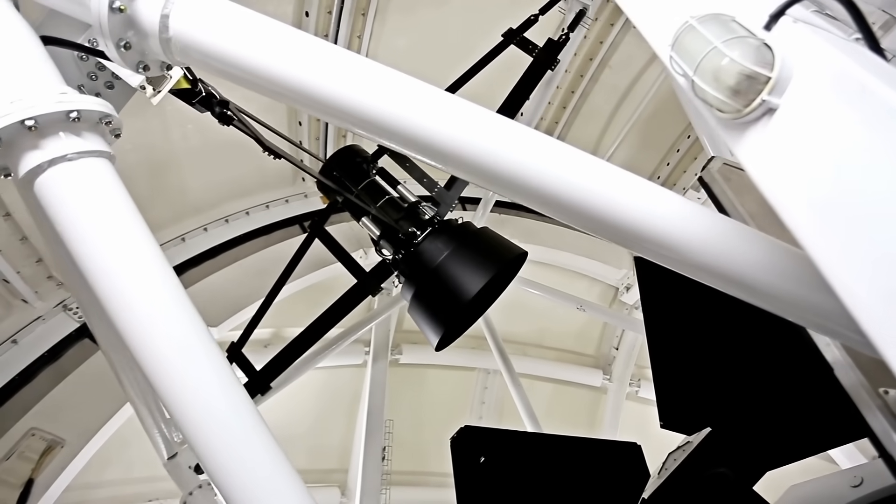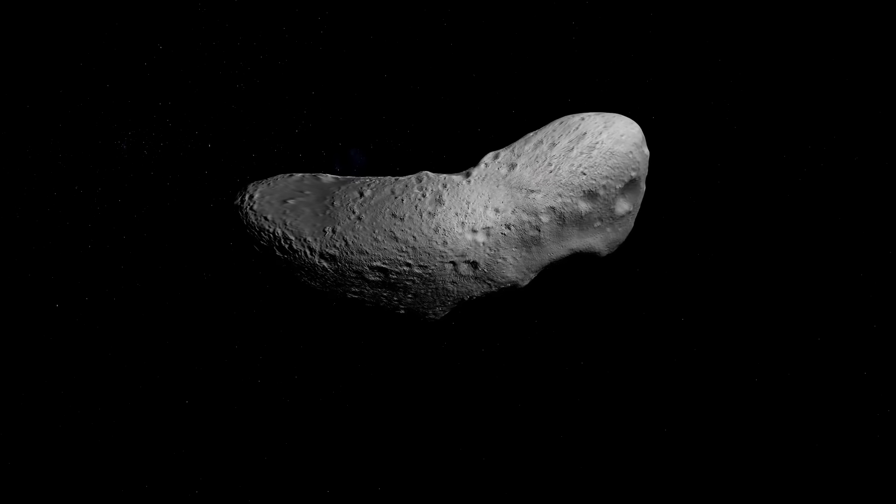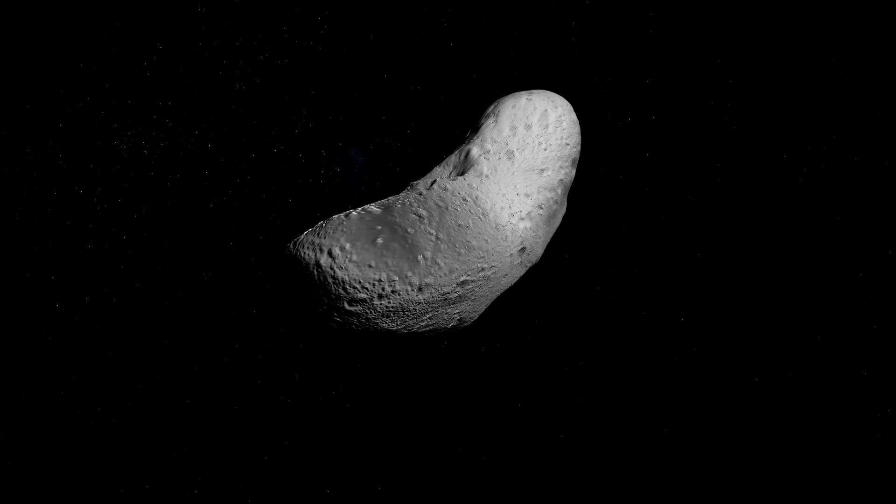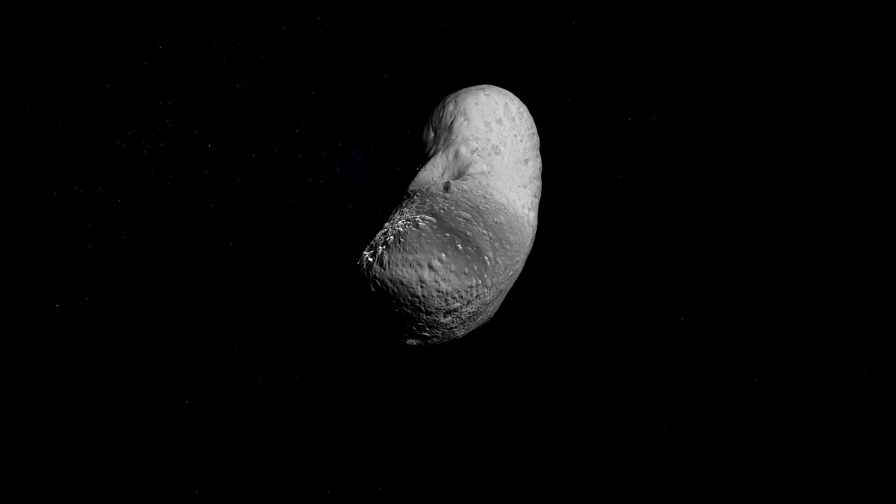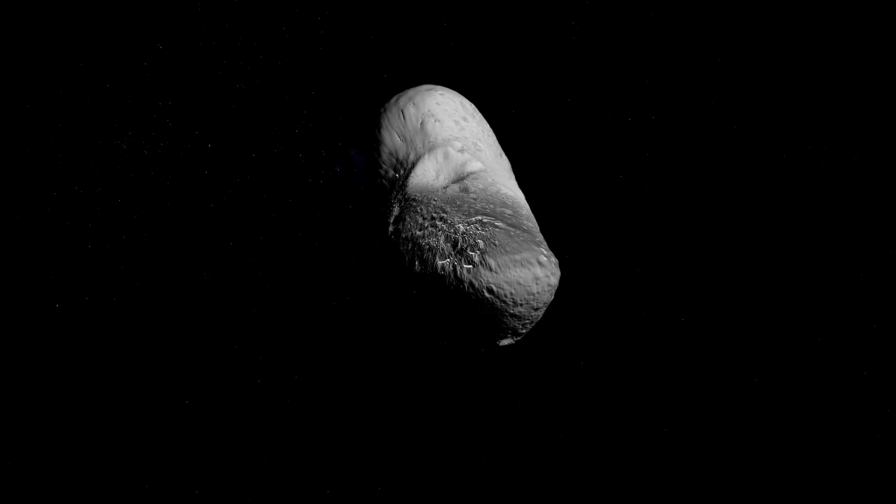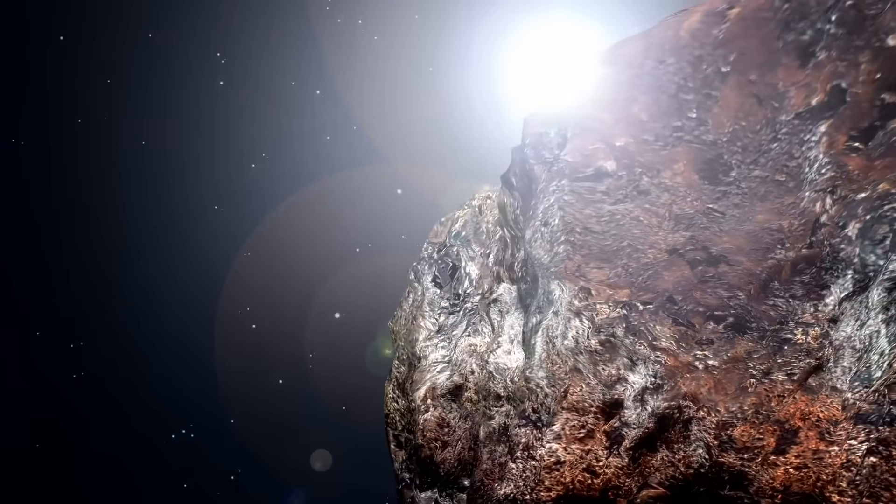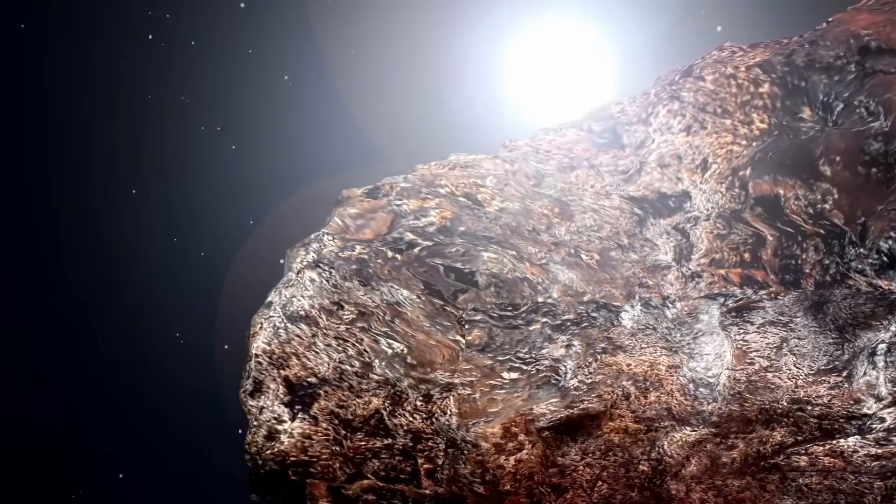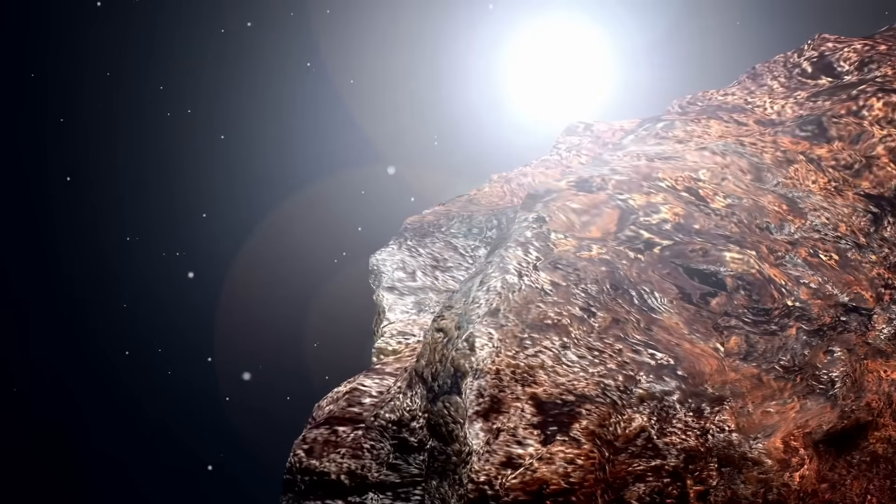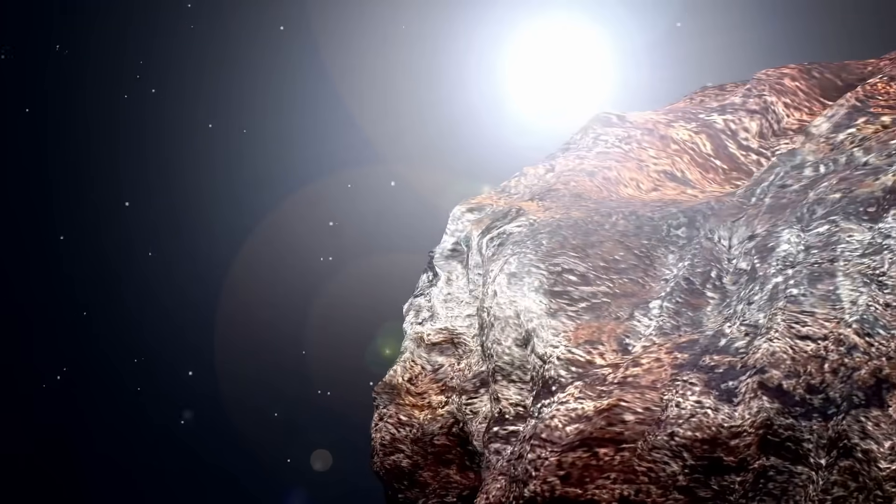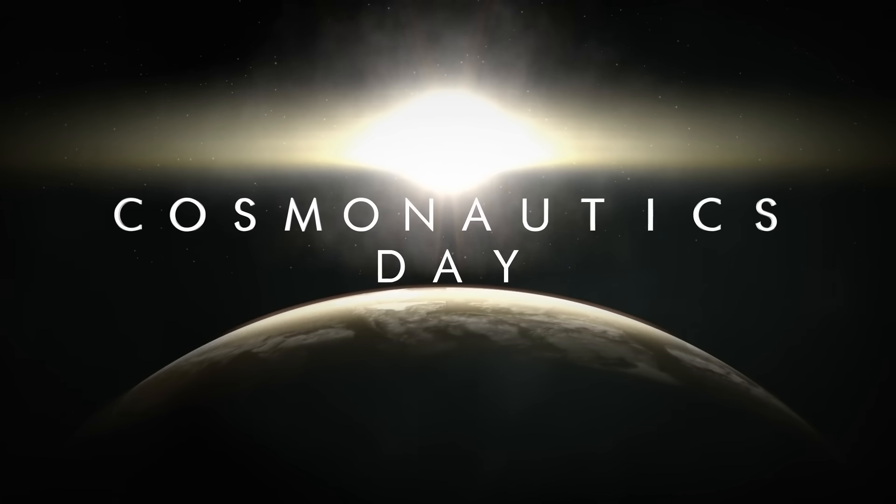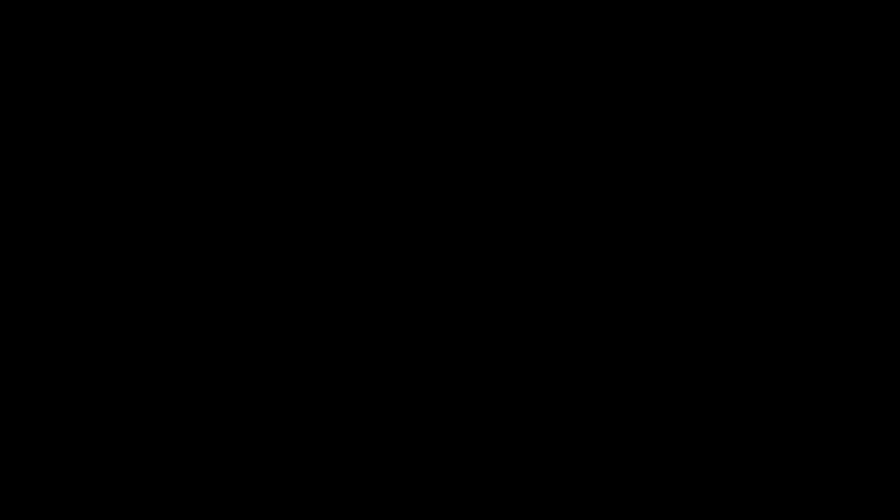The minor planet center received the positions and ran orbit fits to test possible paths. Observers in Chile and the United States moved quickly to confirm the discovery. Gemini South on Cerro Pachon and the Southern Astrophysical Research Telescope took deeper images that mapped the tail and tracked brightness changes. The NASA Infrared Telescope Facility measured heat in the near-infrared.